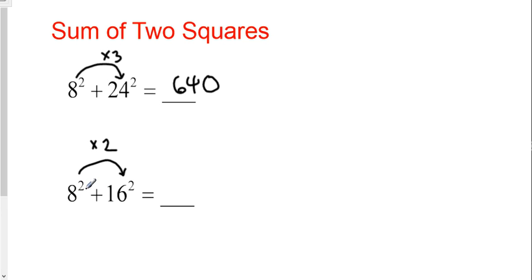So, eight squared is 64, half of that is 32, and you add a zero, 320.